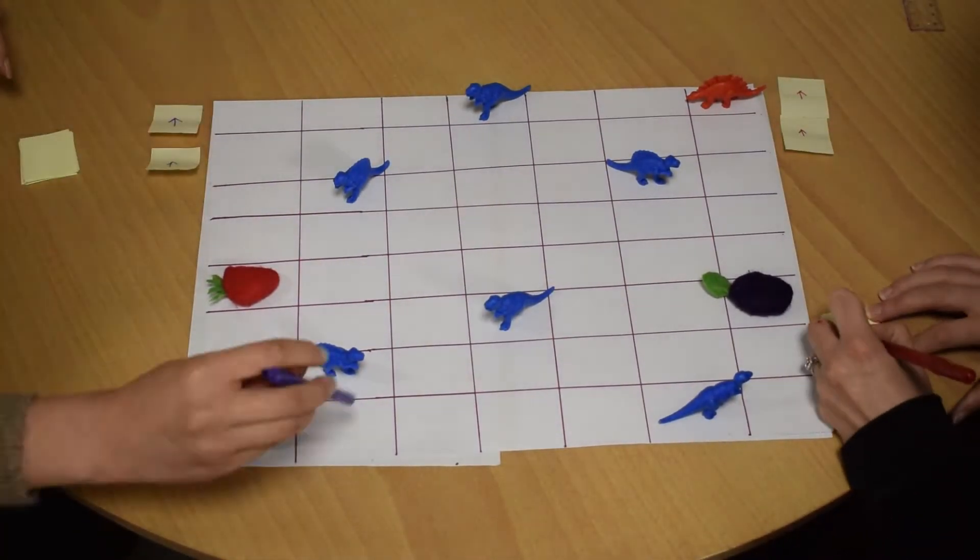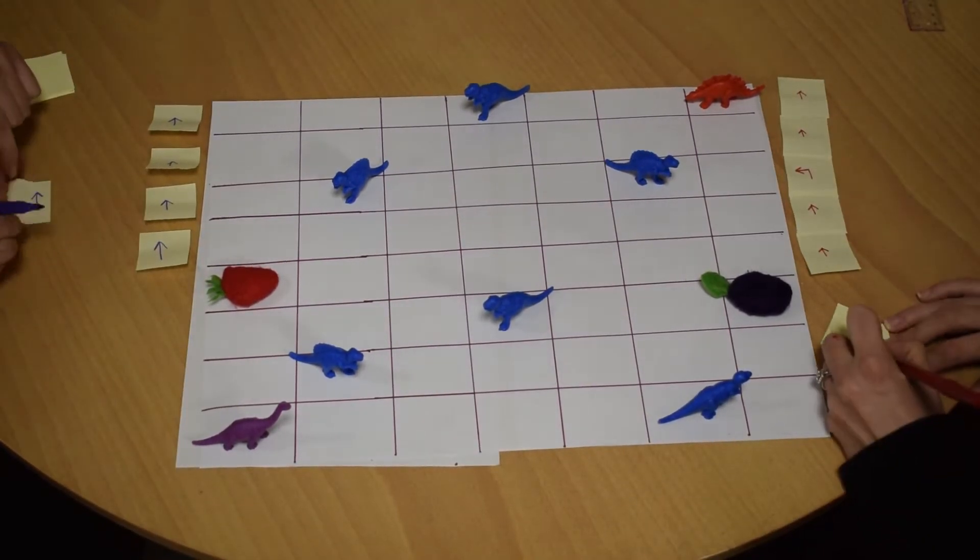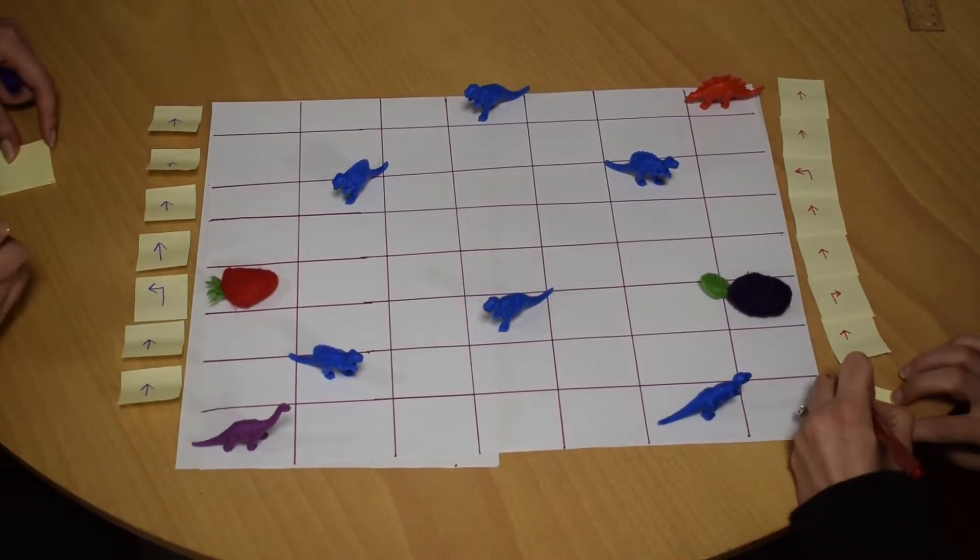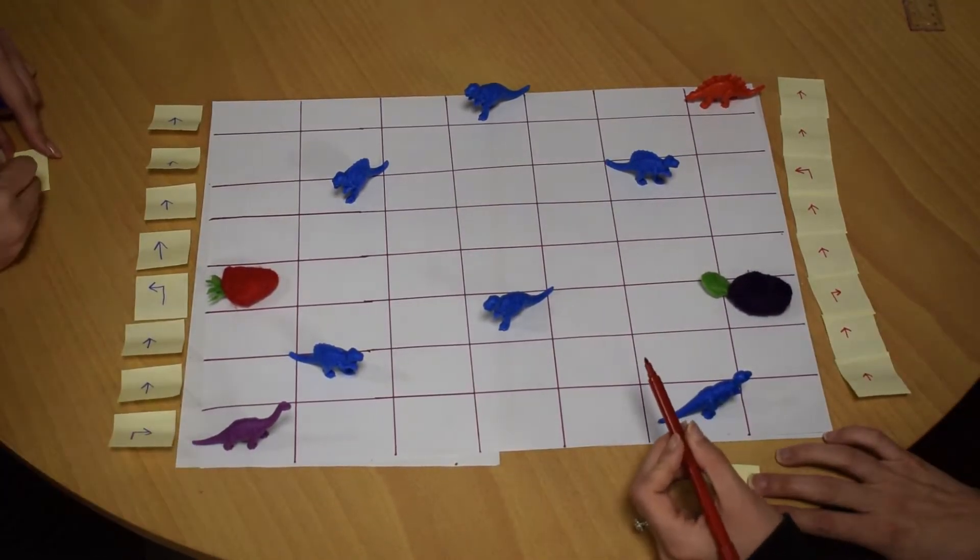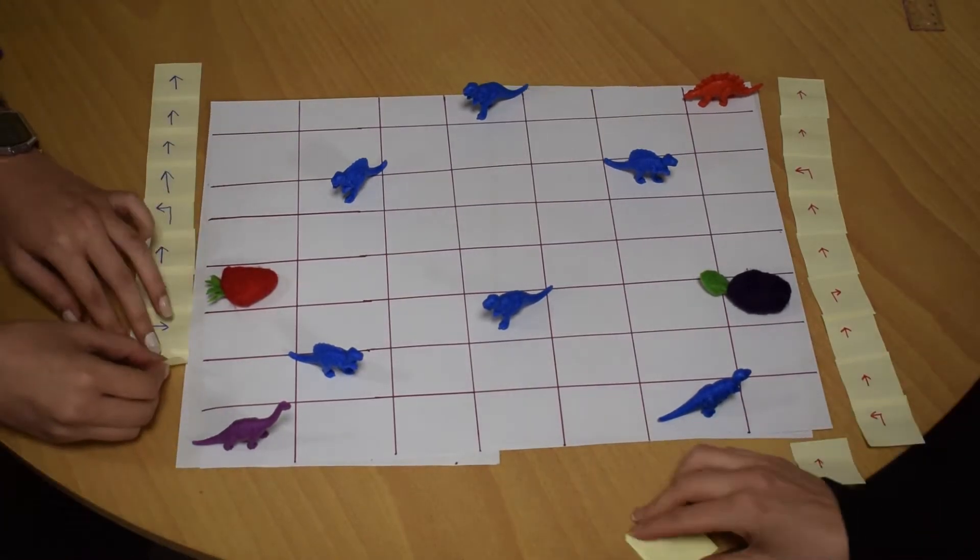For younger children, you can make it simpler by having them write the code one step at a time and move the piece while they do it. For older children, you can write the whole code out like we're doing and then test your code at the end. That makes it a little bit trickier.